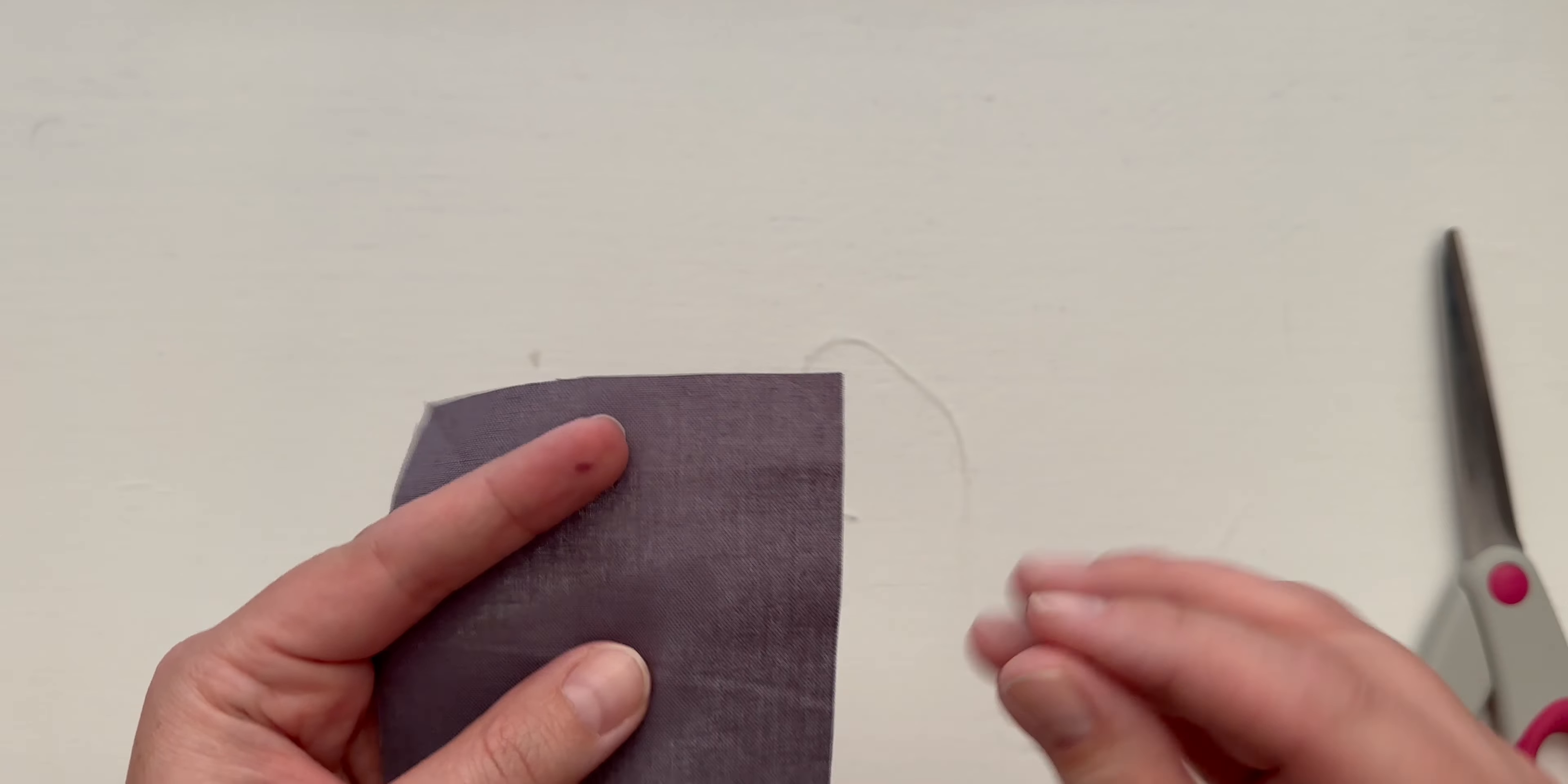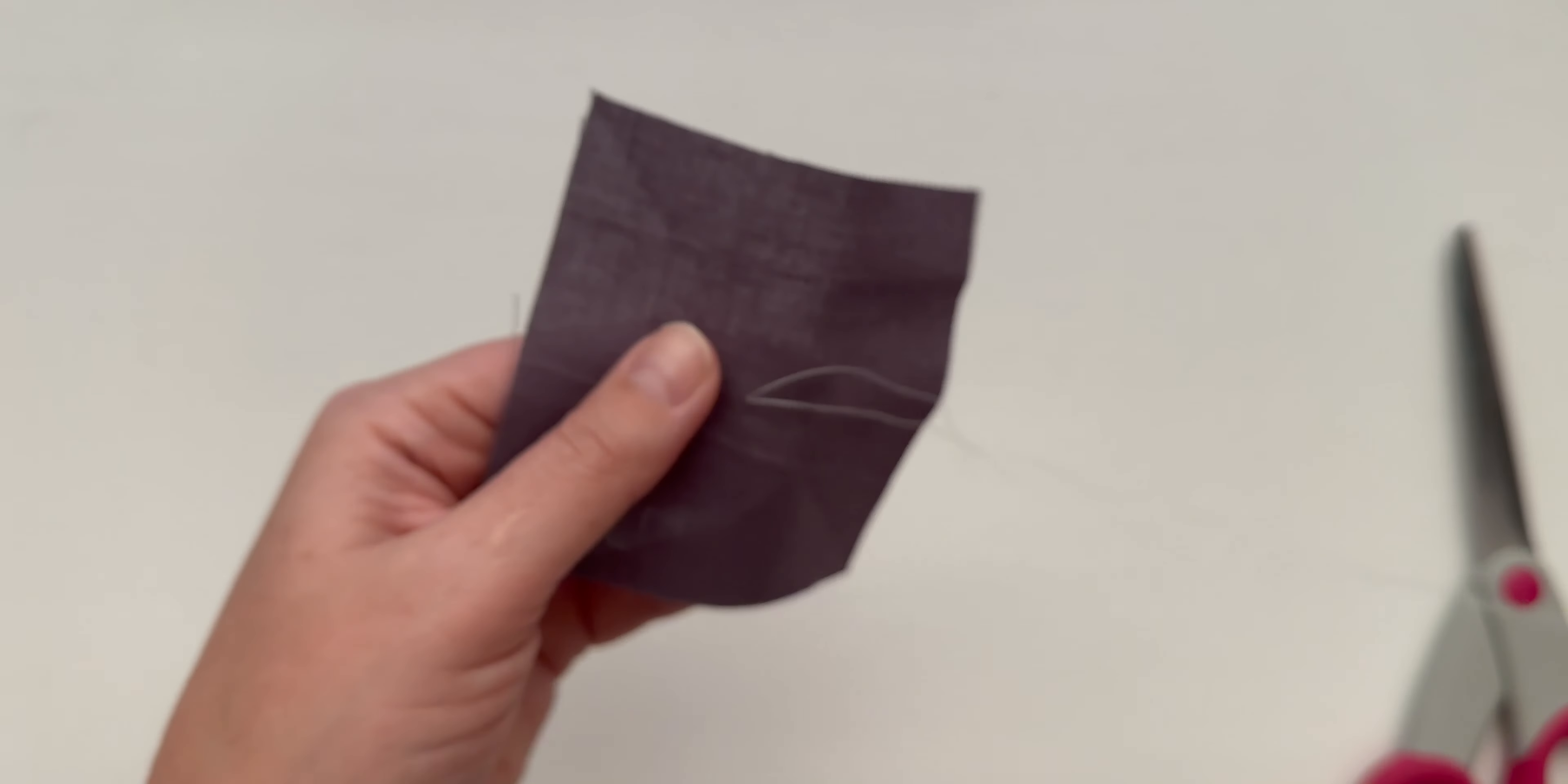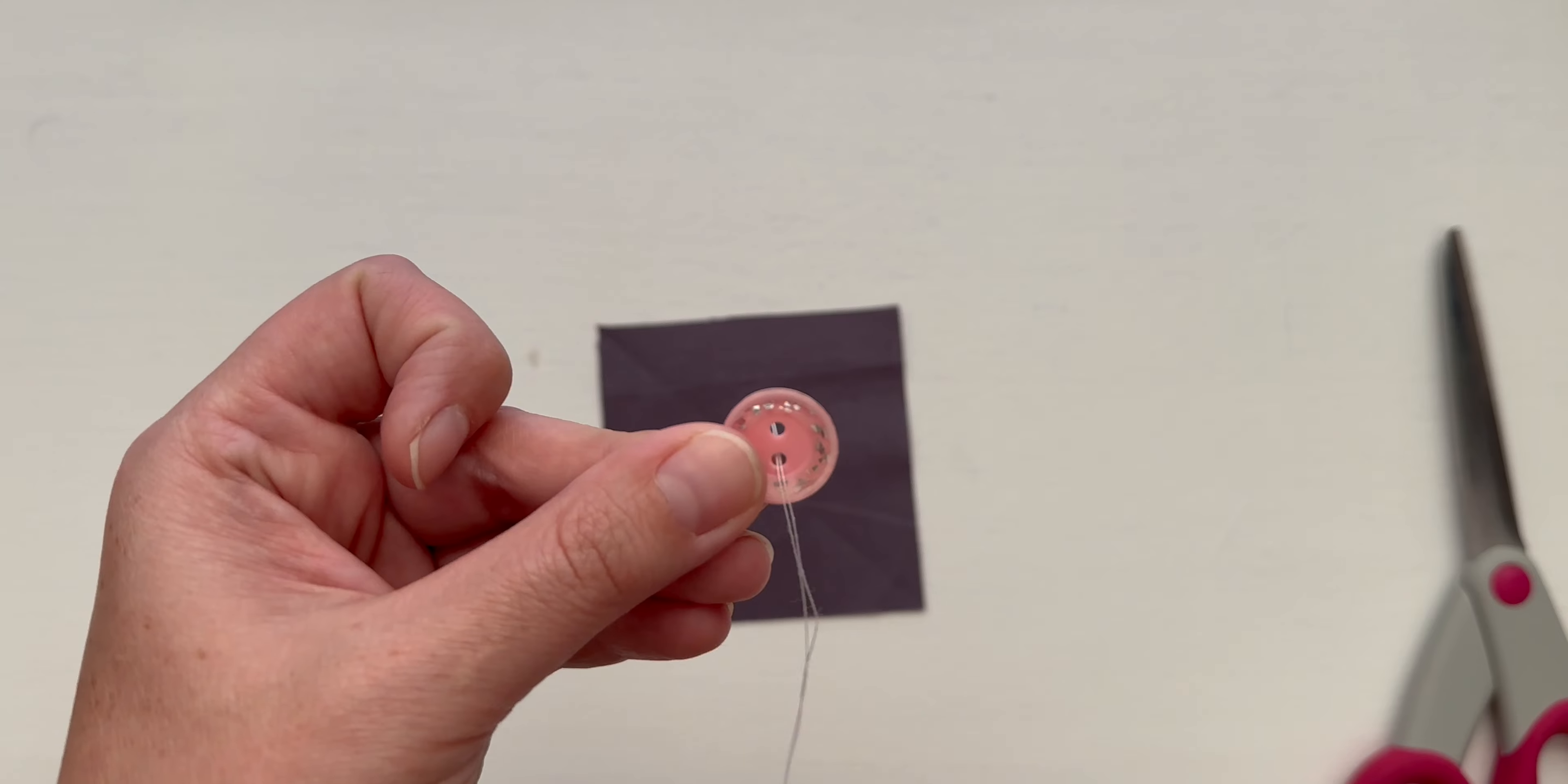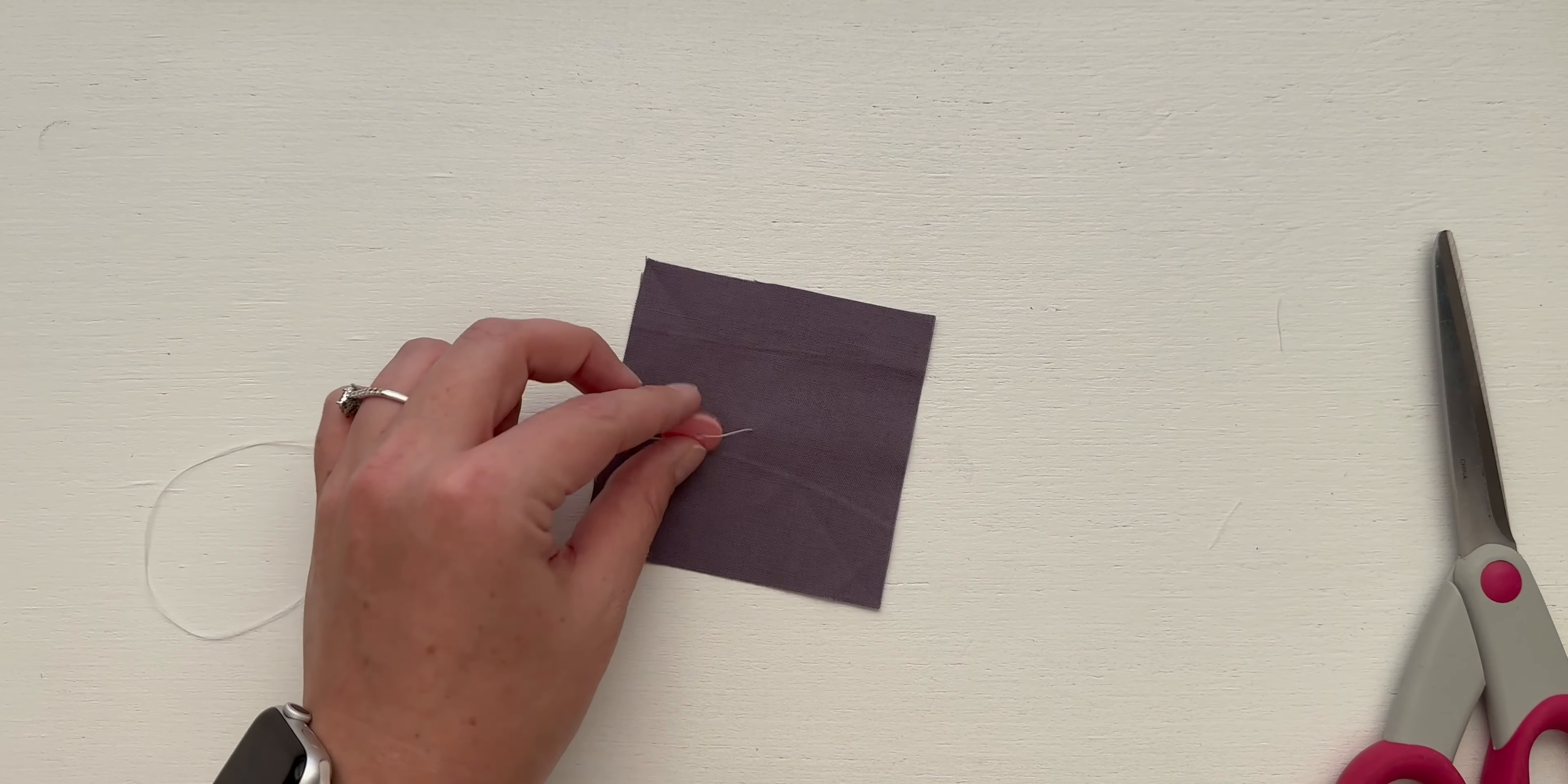The first thing I'm going to do for step two, which is securing the button to the fabric, is sending my needle through the fabric. I'm going to thread my needle through one hole of the button and then I'm going to go through the opposite hole without going through the fabric just yet. Once I get my button to this point I want it to be face down.